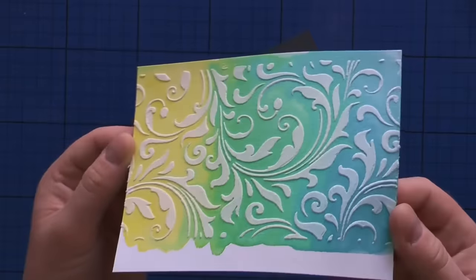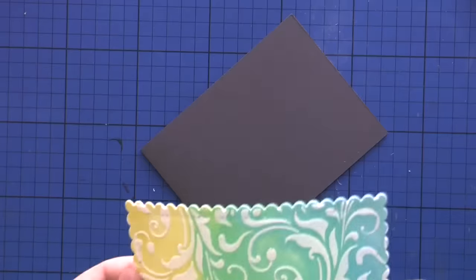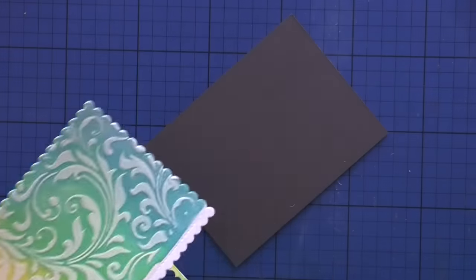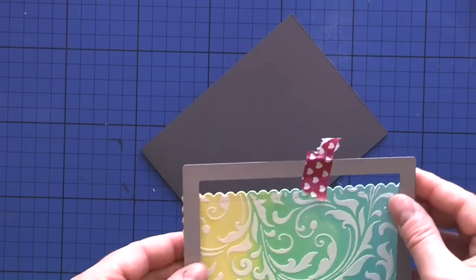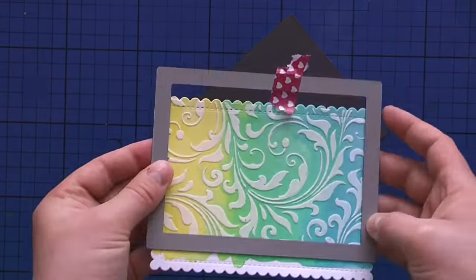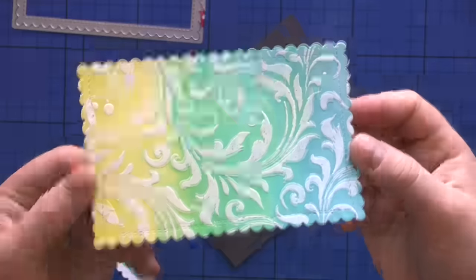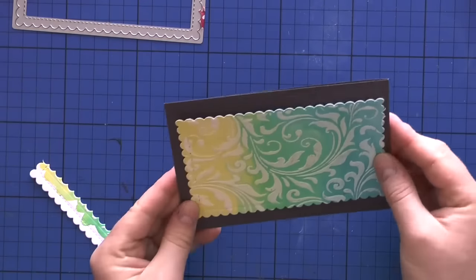After it was dry, the embossing paste kind of peeked through and stayed white while the background was colored. I then used W Plus Nine Sunshine Layers die and used it twice to cut out a smaller piece of the colorful card front.